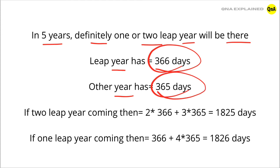If 2 leap years are coming, then 2 into 366 plus 3 into 365 equals 1825 days.